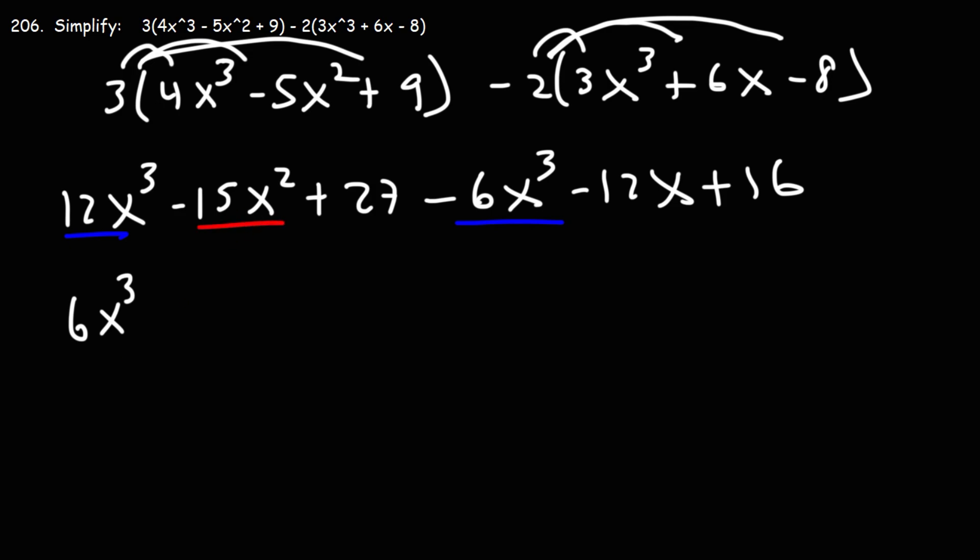We only have one x squared term, so we can rewrite that. And we only have one x term, so we'll just rewrite negative 12x. 27 and 16, we can combine those two. 27 plus 16 is 43.